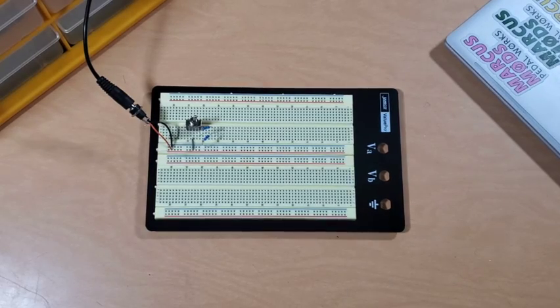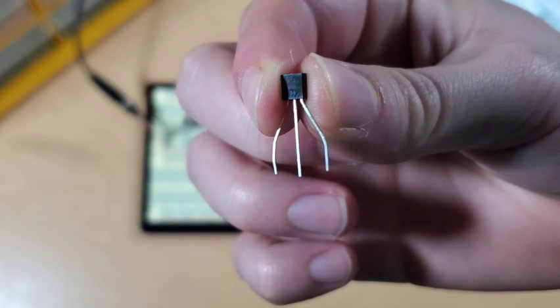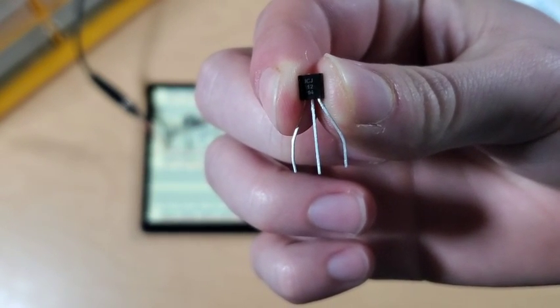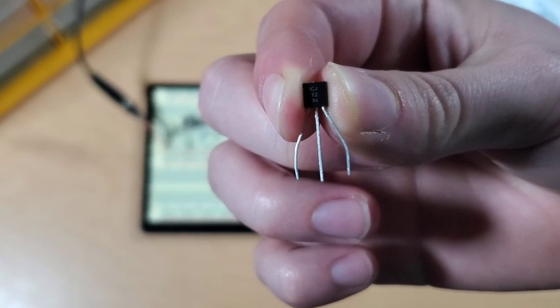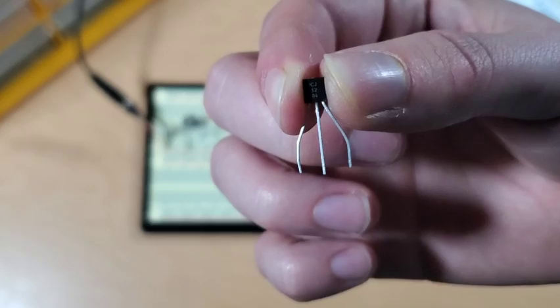So next we need to go ahead and grab our JFET. In this case, we're using a J112. If you're looking at the flat face of the transistor, the pinout from left to right is going to be drain, source, gate. And you can find that just by googling J112 pinout.